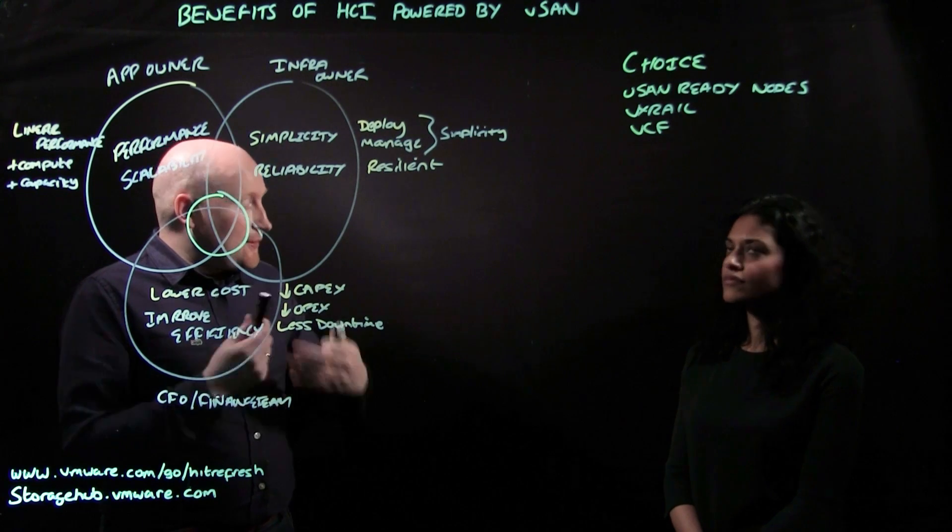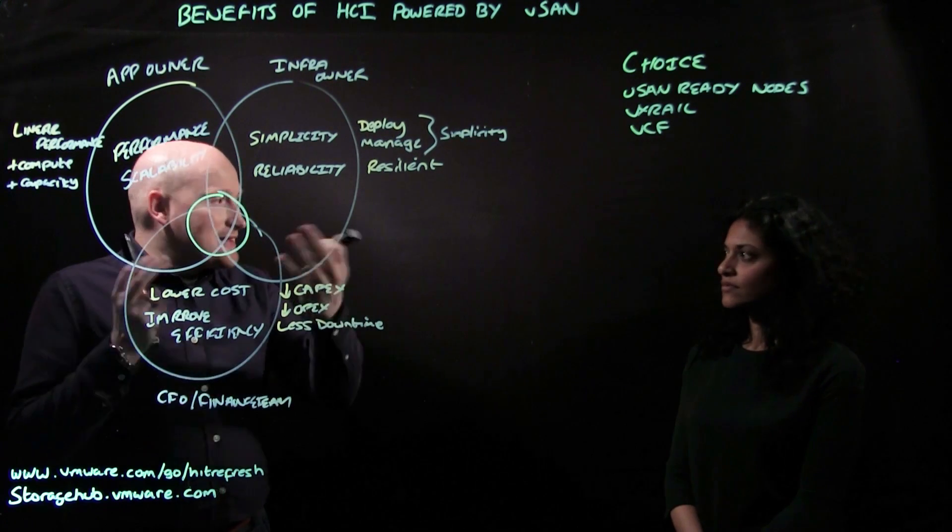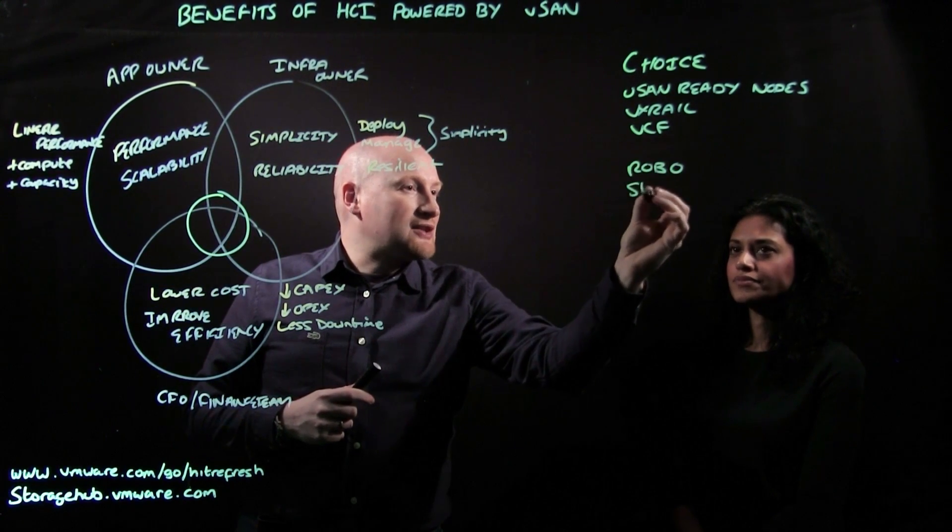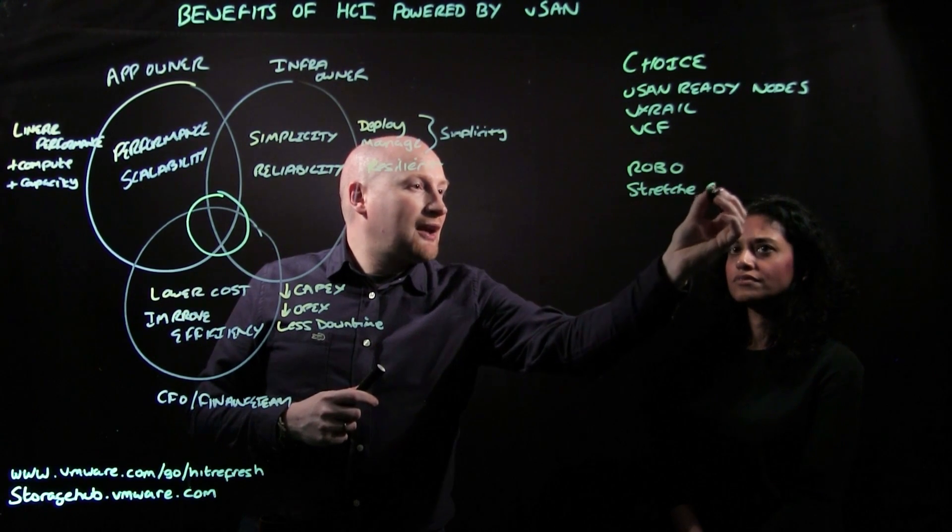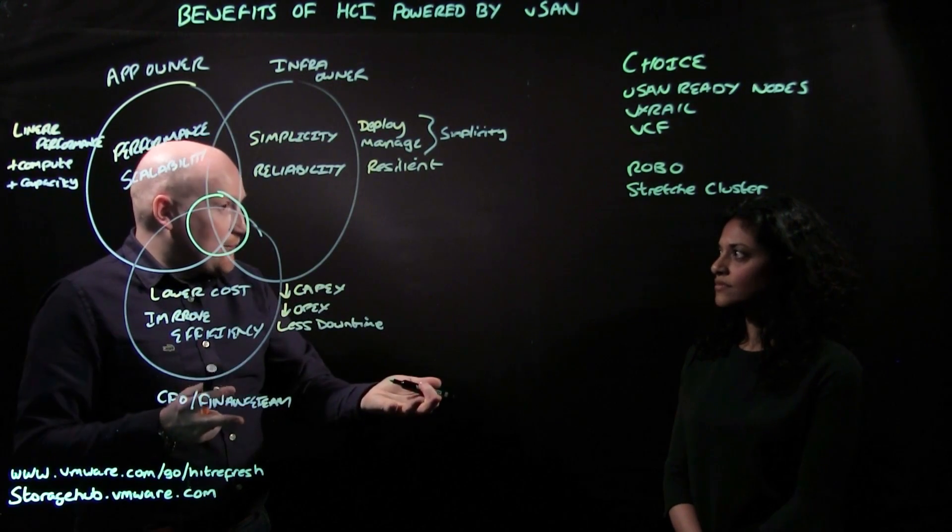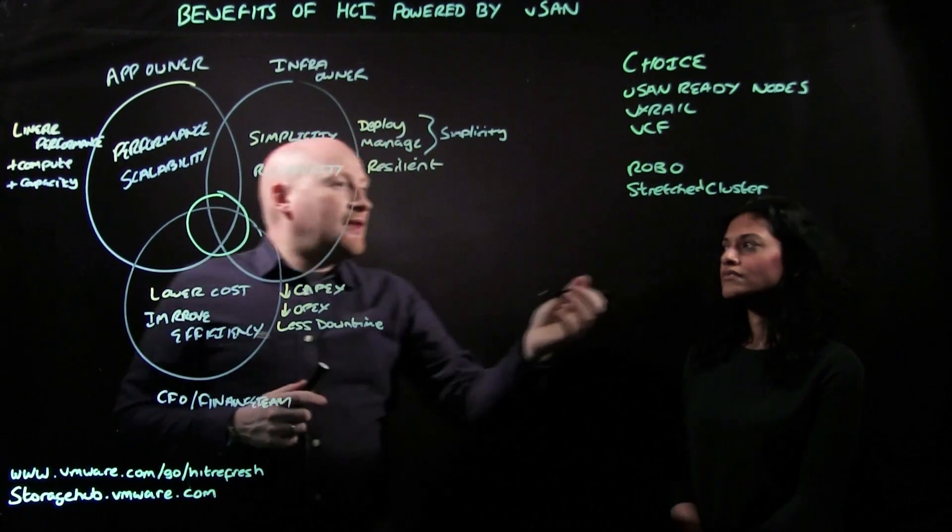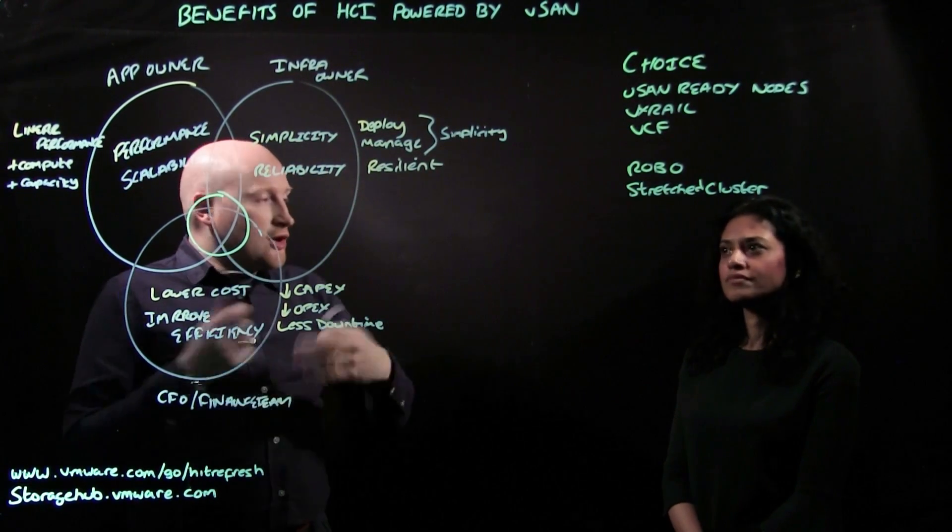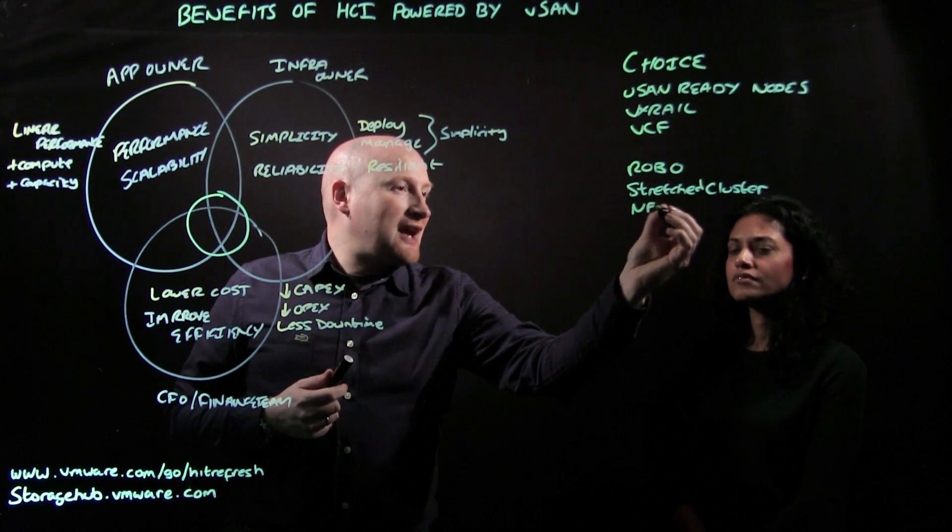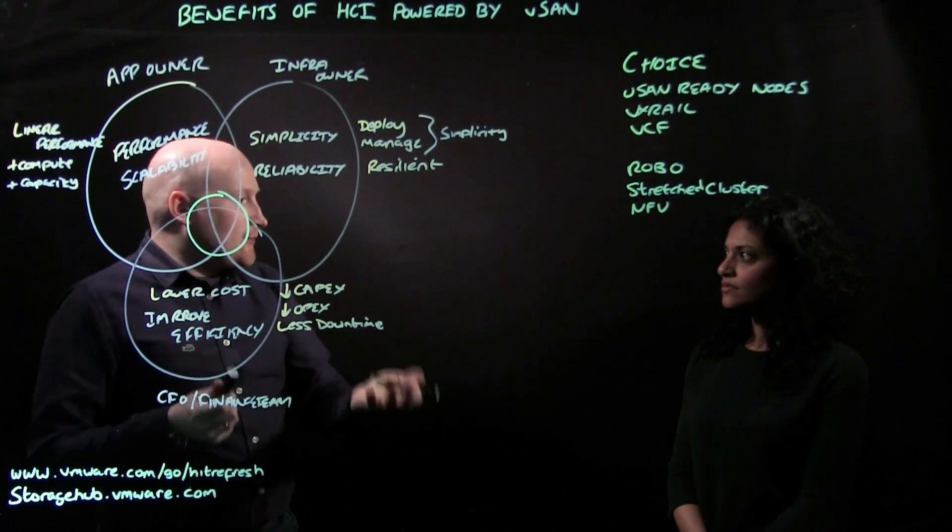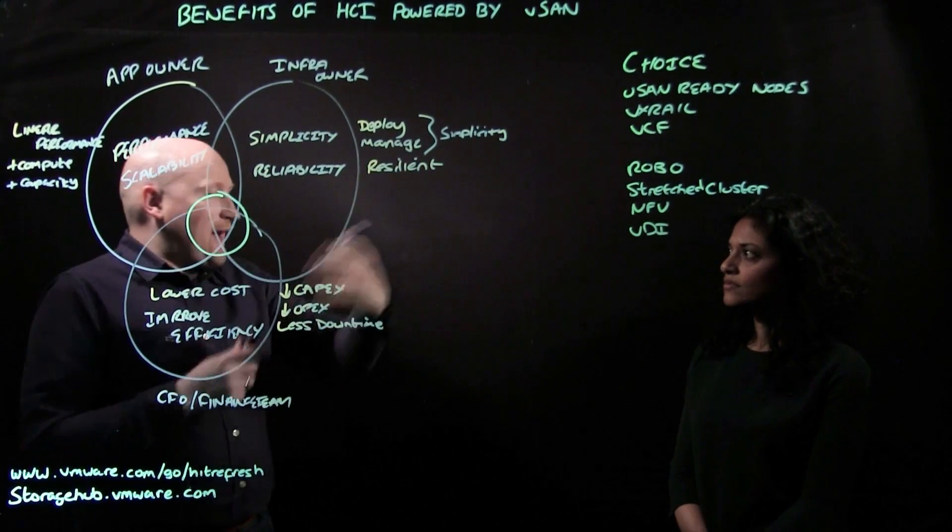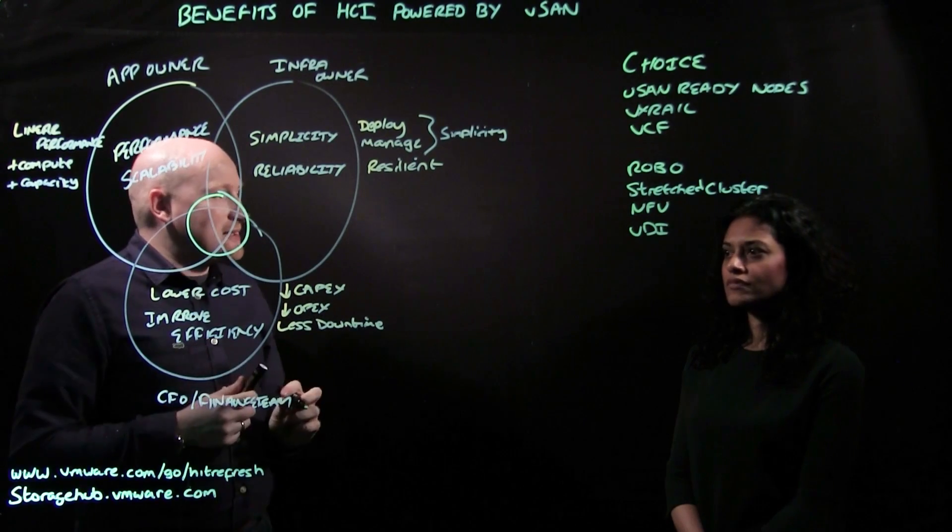Different deployment types. I've already mentioned things like ROBO, so remote office branch office. You can do things like stretch clusters where you're stretching your cluster across two sites, offering business continuity with automated failover. The other solution is standard clusters, so normal vSphere clusters. But there's also things like for telecommunications, there's NFV, and also things like, let's not forget, the virtual desktop, so VDI deployments. So vSAN is actually ready for any type of solution, and we actually have different deployment types to meet those requirements.